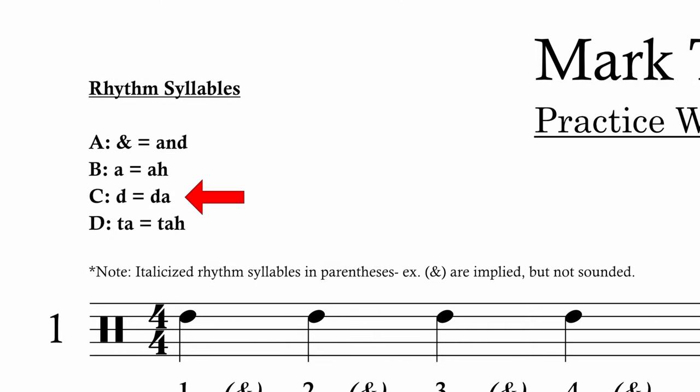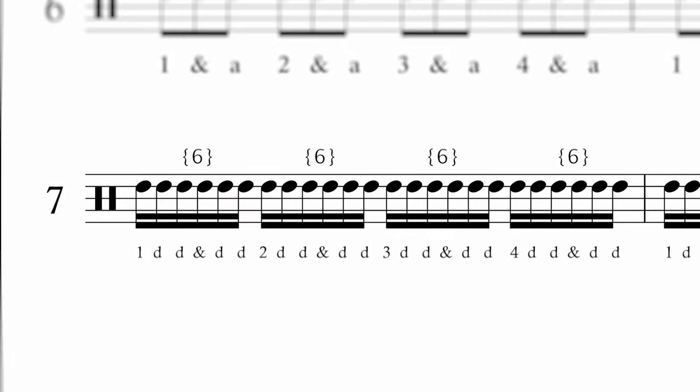Looking at top left, D equals DA-DA. If you look down to number seven, you see the pattern: one D D and D D. We're going to say: one DA DA, and DA DA, two DA DA, and DA DA. Okay?